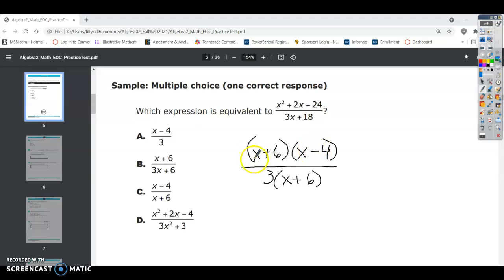And you can check this by doing distributive property or some call it FOIL. So x times x is x squared. X times negative 4 is negative 4x plus 6x. So negative 4x plus 6x is our plus 2x. And then 6 times negative 4 is negative 24. So that works out.